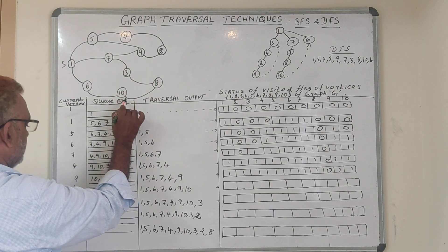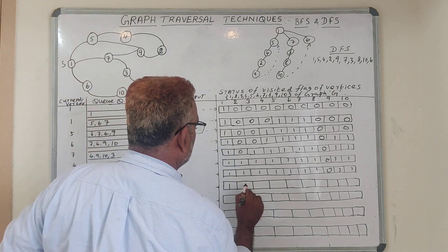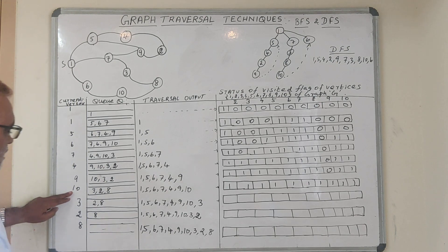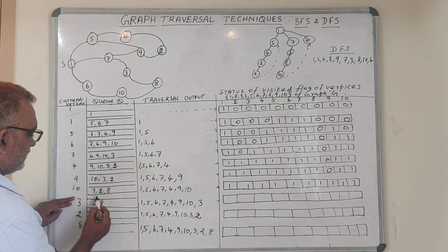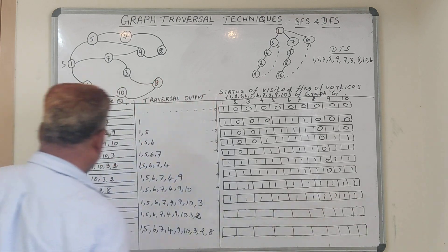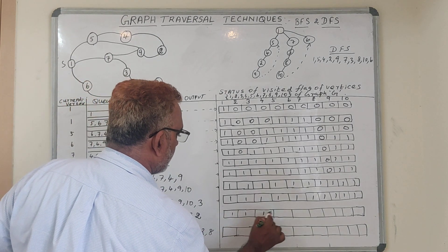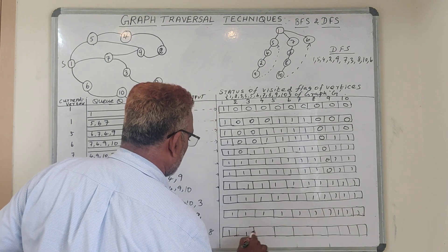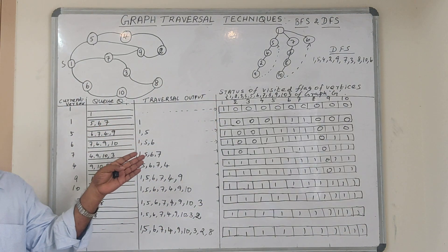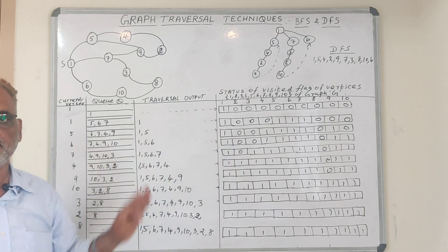Dequeue vertex 10. Vertex 10 is connected with 8 — include value 8 now. Dequeue 10 and include it in the output. 8 is included. Now dequeue vertex 3. For 3 we have adjacent vertices 2 and 8, but both are already visited — mark them as visited (value 1). Similarly for vertex 2, adjacent vertex 8 is already there. This status flag represents whether each particular vertex has been visited or not.